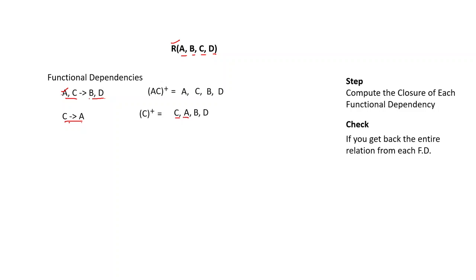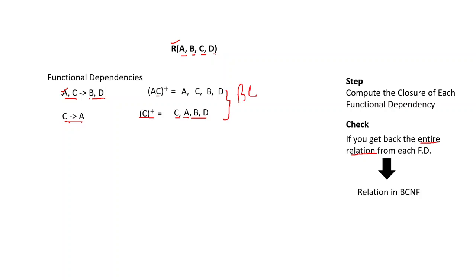Next you have to check if you get back the entire relation from the closure of each functional dependency. The closure of AC gives you A, B, C, D, and the closure of C also gives you A, B, C, D. So you can safely conclude that this relation is in BCNF.